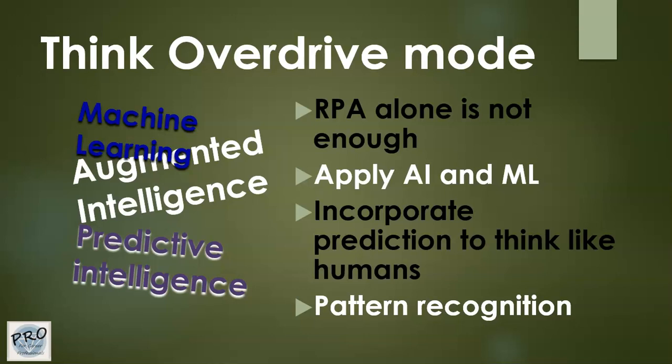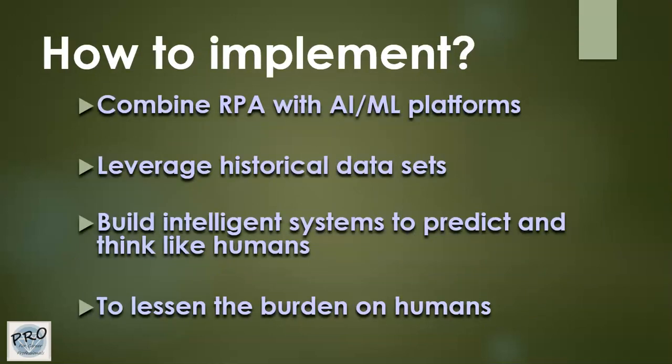Hyper automation incorporates artificial intelligence and machine learning in order to automate processes that would not have been possible through RPA alone. To implement it, you combine RPA with AI/ML-centric platforms such as Data Robot, which is an automated ML platform. You leverage historical data sets to build prediction, forecast future trends, and build more intelligent systems that can predict and think like humans to augment their actions and lessen the burden on humans.